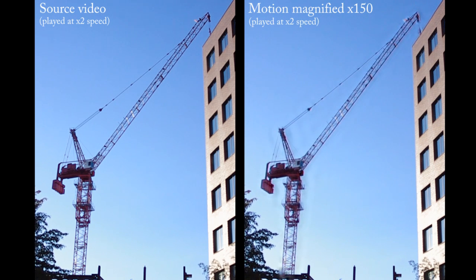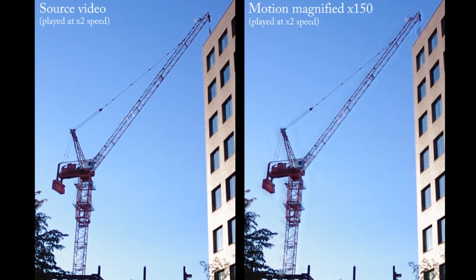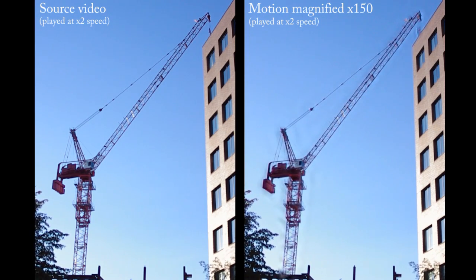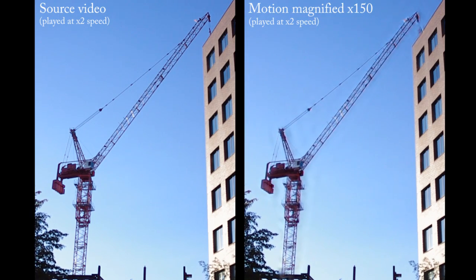For example, man-made structures like the crane in this video are designed to sway in the wind. Amplifying the changes in this video reveals the swaying of the crane's mast and the undulation of its hook.